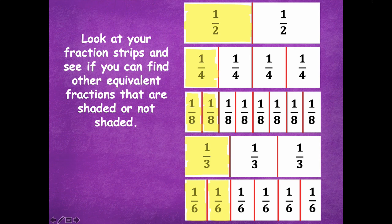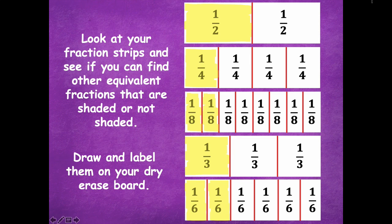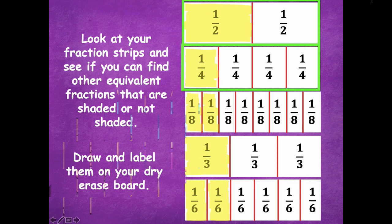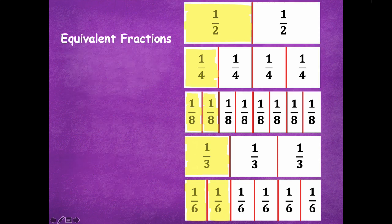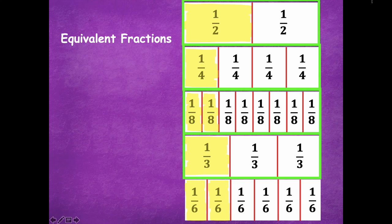Look at your fraction strips and see if you can find other equivalent fractions that are shaded or not shaded. Draw and label them on your dry erase board, then click play when you're ready. So two-halves and four-fourths are going to be the same — they're equivalent to each other because they're both one whole. One-half and one-half is two-halves, which is equivalent to four-fourths, which is equivalent to eight-eighths, which is the same as three-thirds and six-sixths. All of those wholes are going to be equivalent to each other.